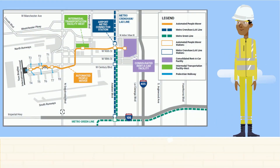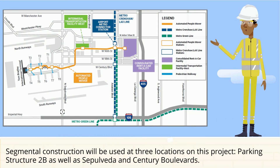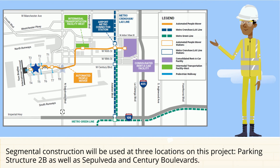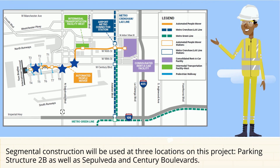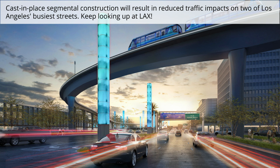Segmental Construction will be used at three locations on this project: Parking Structure 2B, as well as Sepulveda and Century Blvd. Cast-in-Place Segmental Construction will result in reduced traffic impacts on two of Los Angeles' busiest streets.